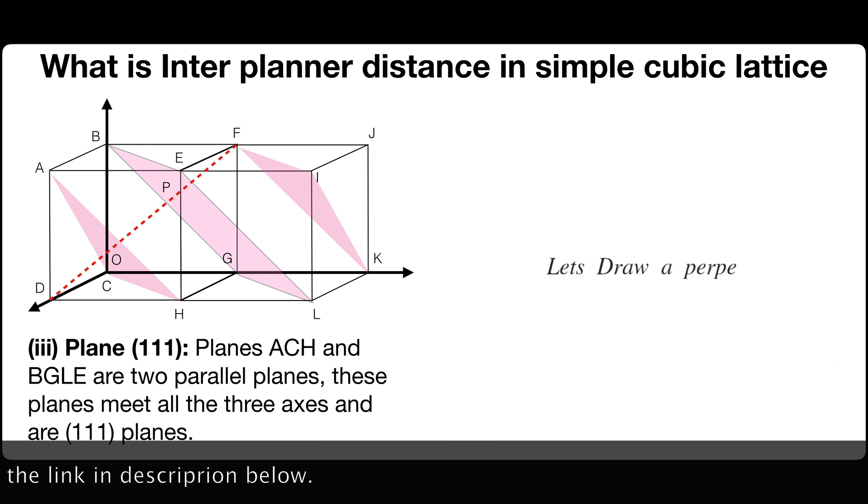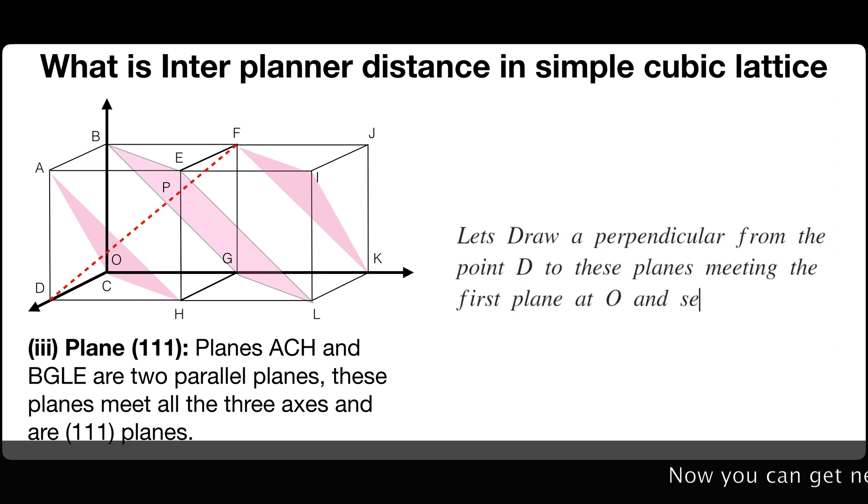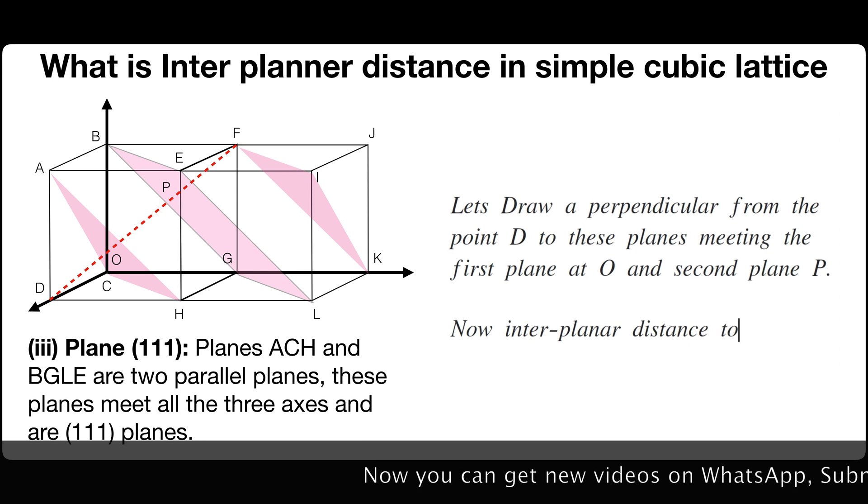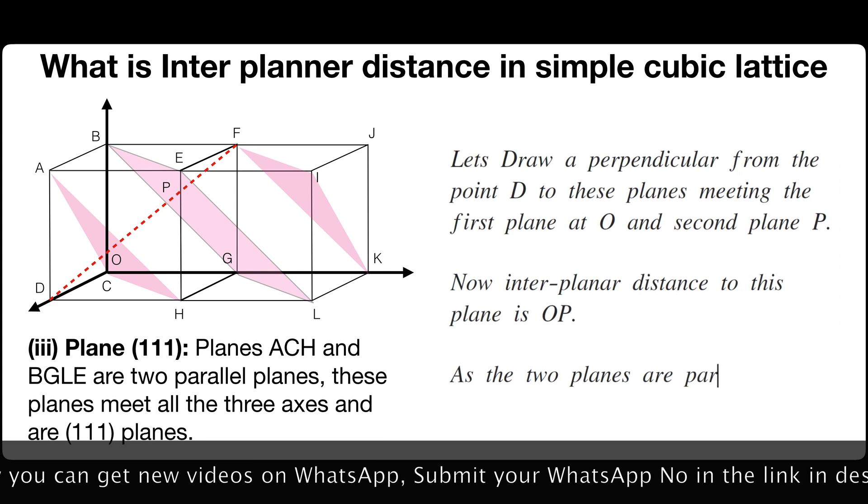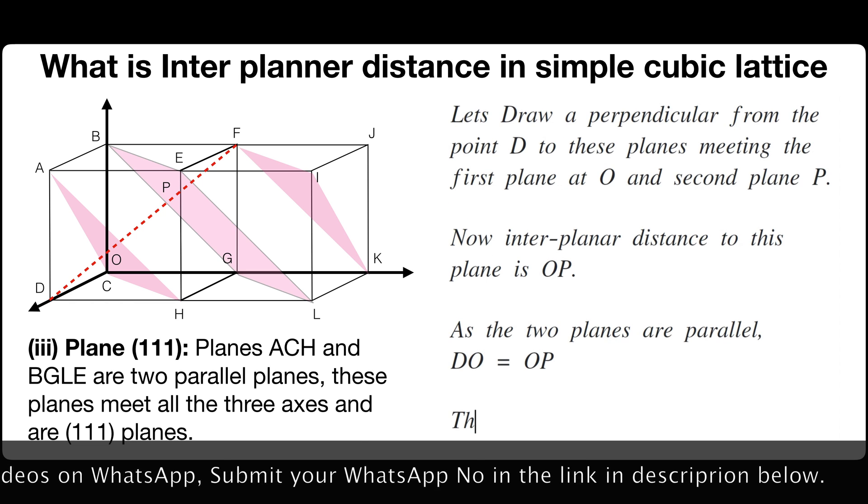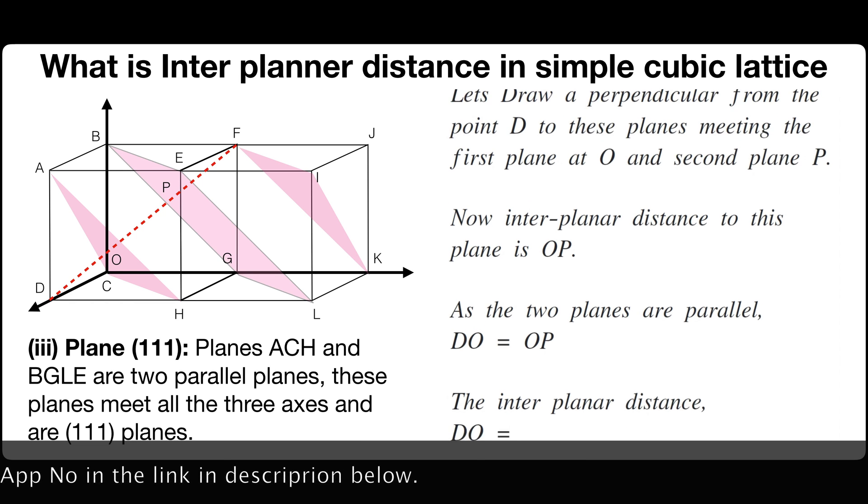Now let's draw a perpendicular from the point D to these planes meeting the first plane at O and second plane at P. Now interplanar distance to this plane is OP. As the two planes are parallel, OD is equals to OP. The interplanar distance OD is equals to OP is equals to PE.